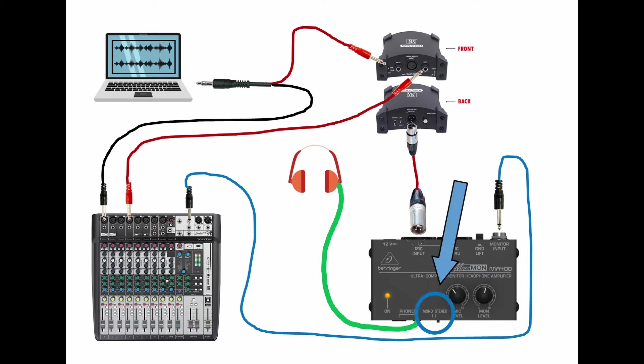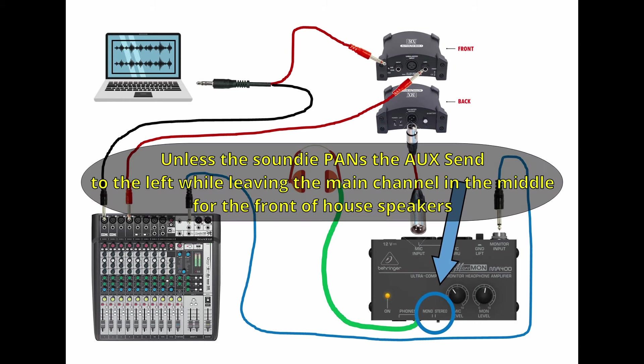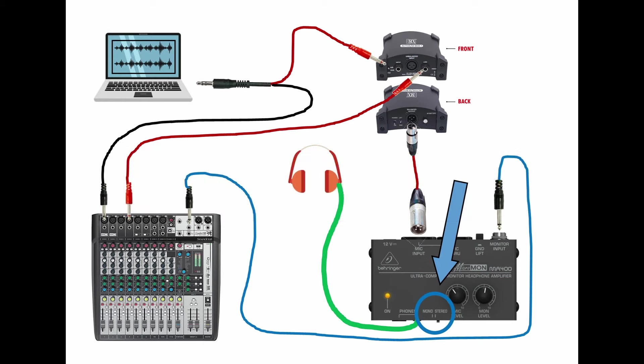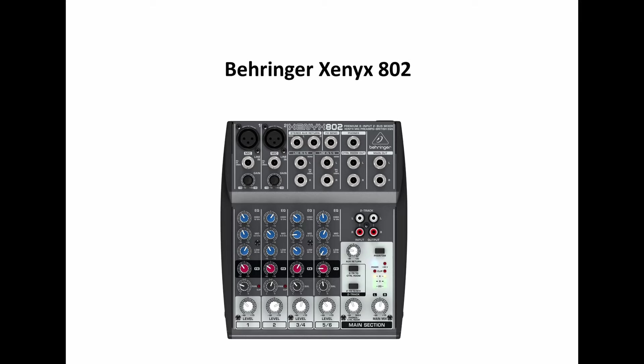On the Behringer MicroMon there's a toggle switch that lets you change from a stereo mix to a mono mix in your headphones. If you prefer it in stereo, your sound engineer would pan the backing track left and the click track right and send that signal to the MicroMon. However, if the sound engineer pans it on the main front of house desk, it will also be panned through the front of house speakers - so in this setup you generally want to keep it as a mono mix.